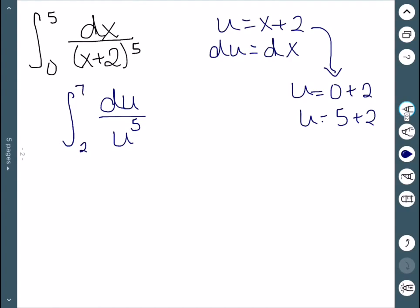So when we integrate this, we would have negative 1 over 4, u to the minus 4th, between 2 and 7. Which once we evaluate, negative 1 over 4 times 7 to the negative 4 minus 2 to the negative 4.